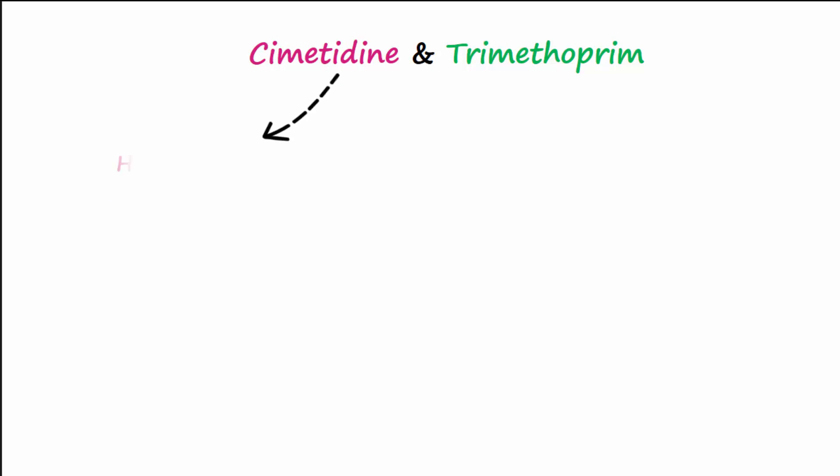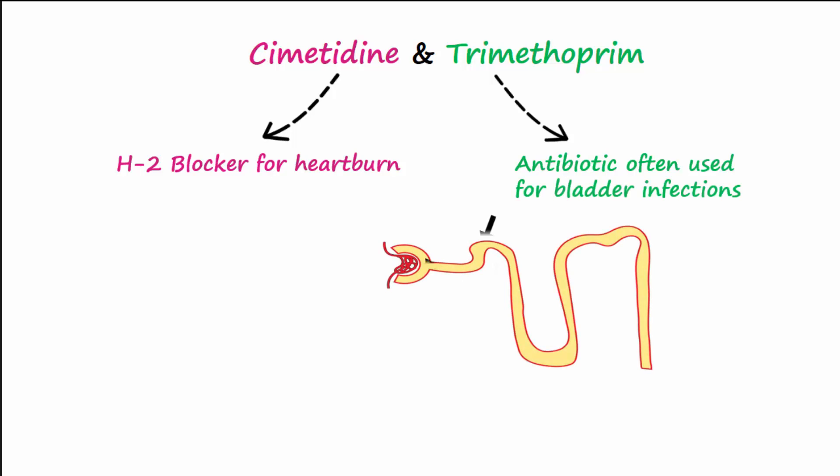Cimetidine is an H2 blocker used to treat heartburn, and trimethoprim is an antibiotic. Remember that creatinine is both filtered and secreted by the nephron. Both cimetidine and trimethoprim act to reduce creatinine tubular secretion, and therefore increase serum creatinine levels.